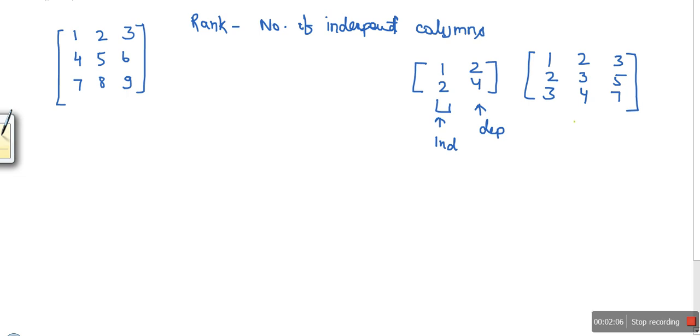So in this matrix, as you can see, this column is not a multiple of this one. If you multiply this column with 2 you will get 2, 4, 6, which is different. So we start from here. This is not dependent, so we will write independent. This is also independent. This is also independent.